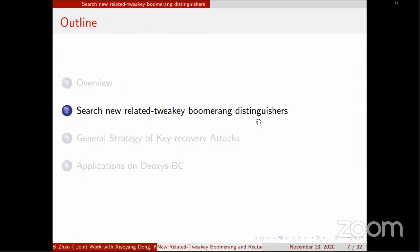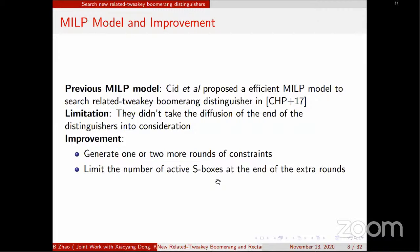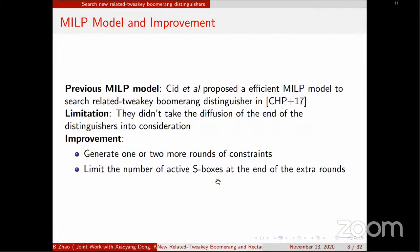At FSE 2017, SEED proposed an efficient MILP model to search for related twin-key boomerang distinguishers, but they didn't take the diffusion at the end of the distinguisher into consideration. We make two improvements: we generate one or two more rounds of constraints, and at the end we limit the number of active S-boxes at the extra rounds. For the first extra round we add constraints for the add-round twin key and MixColumns; for the second extra round we only add constraints for the add-round twin key, then limit the active S-boxes.